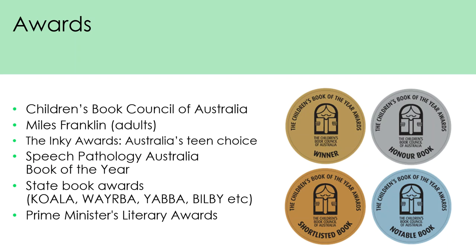There are some issues around basing selection decisions on awards. Award panels are essentially arbiters of taste, making the decision on which book is best in a particular year. This isn't the type of practice we engage in in libraries — rather, we aim to provide a well-rounded, holistic collection. A book's non-inclusion on an award list is not a reason not to select it. However, where funds are limited, looking at award lists can be a useful starting point for collection development.